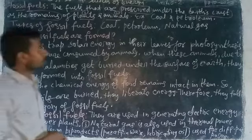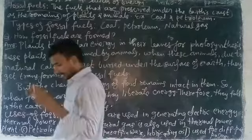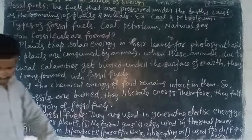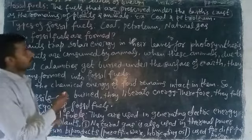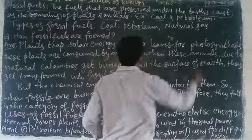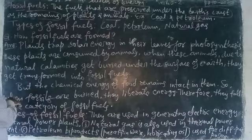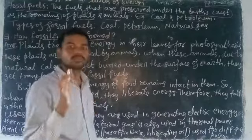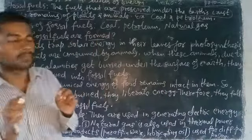What are examples of fossil fuels? Coal and petroleum are examples. The types of fossil fuels are: coal, petroleum, and natural gas. Now the question is: how are fossil fuels formed? Let us understand this deeply.